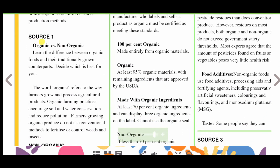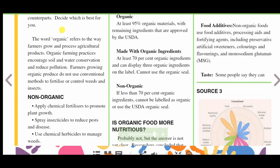So we have Source 1 here: organic versus non-organic. Learn the difference between organic food and their traditionally grown counterparts, and decide which is best for you. The word organic refers to the way farmers grow and process agricultural products. Organic farming practices encourage soil and water conservation and reduce pollution. Farmers growing organic produce do not use conventional methods to fertilize or control weeds and insects.